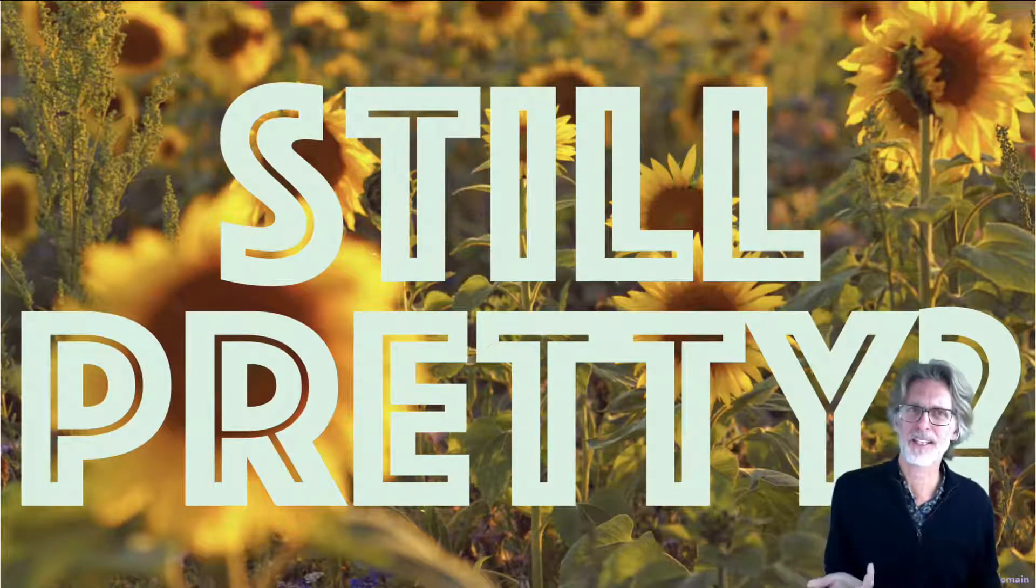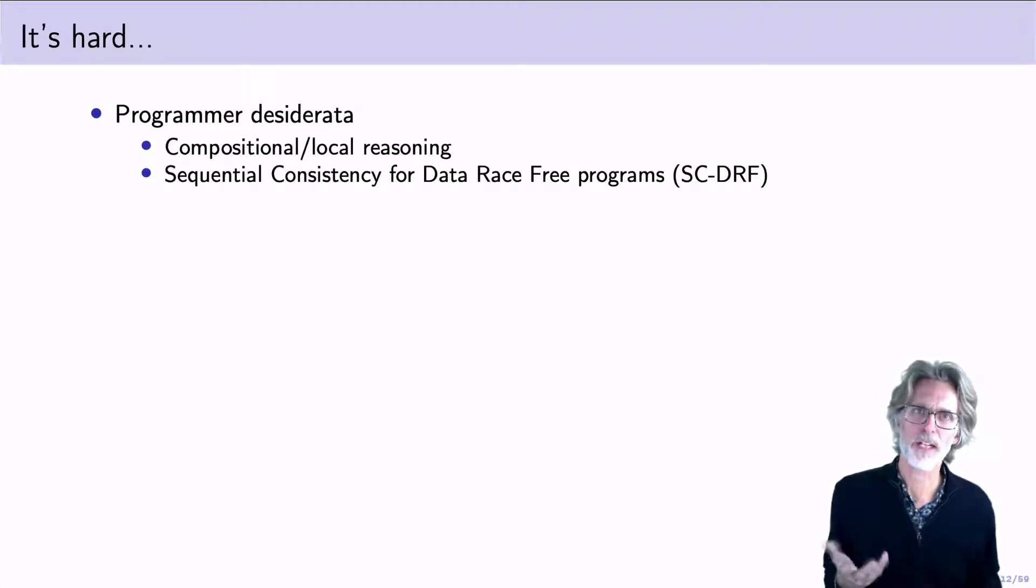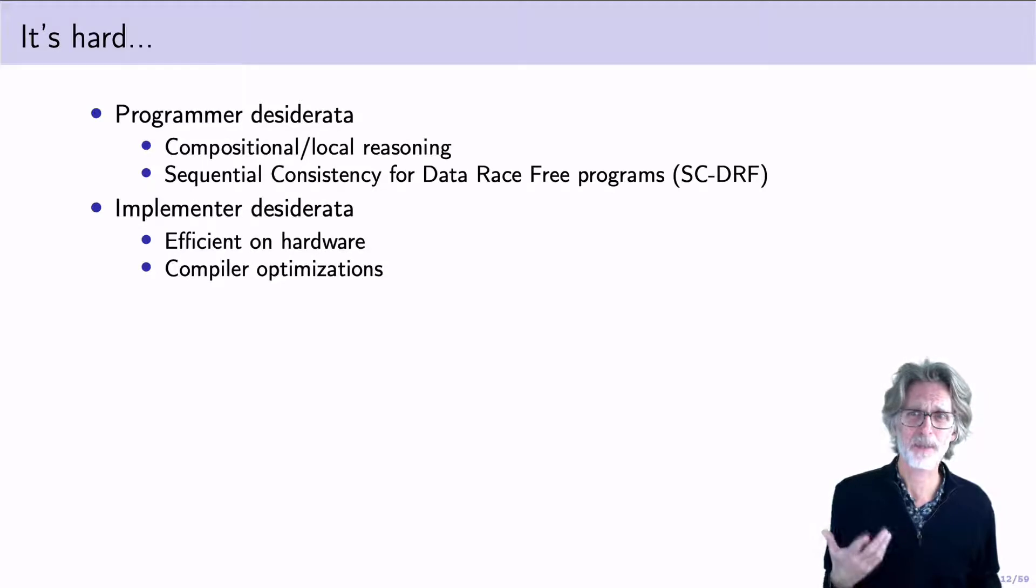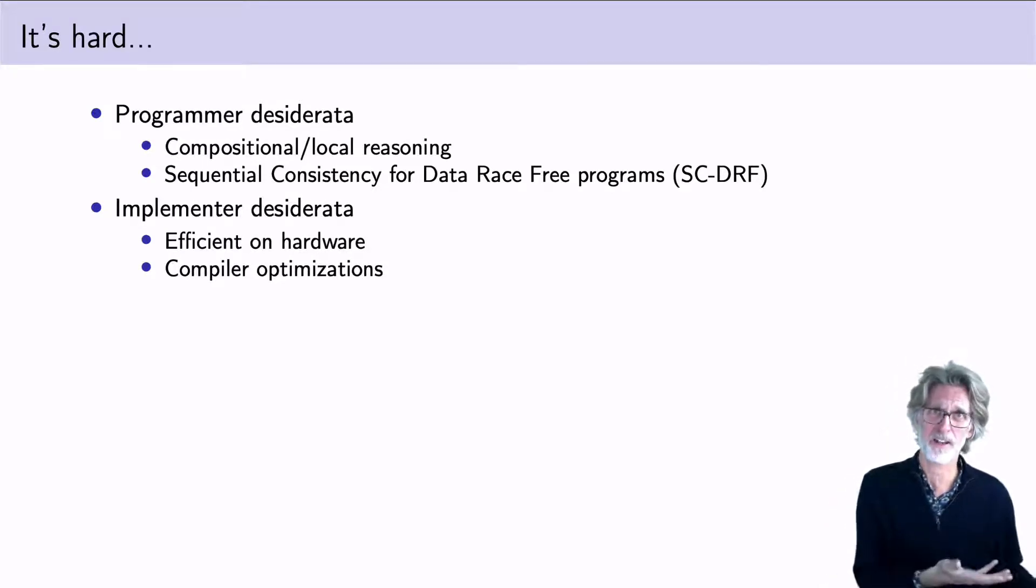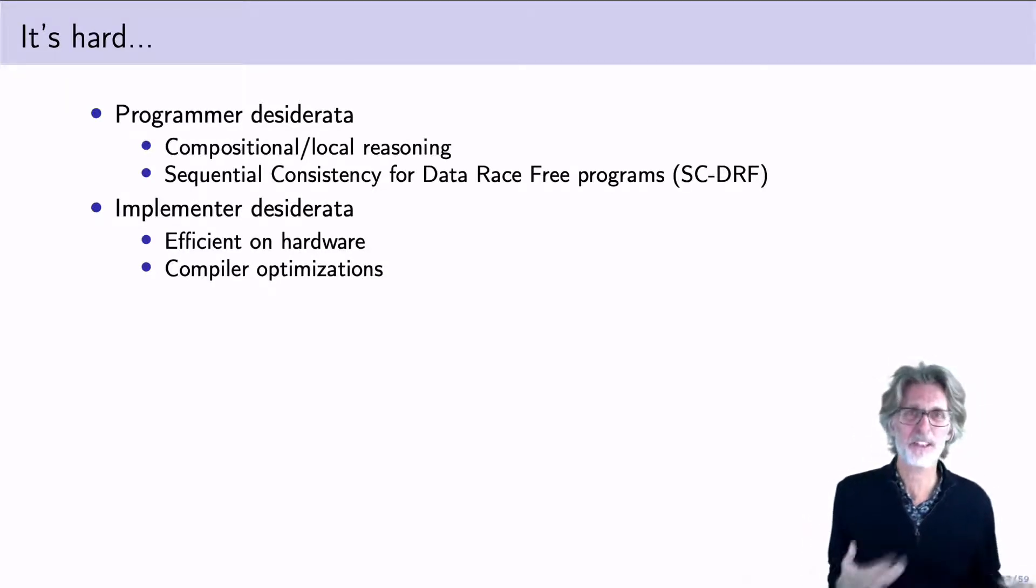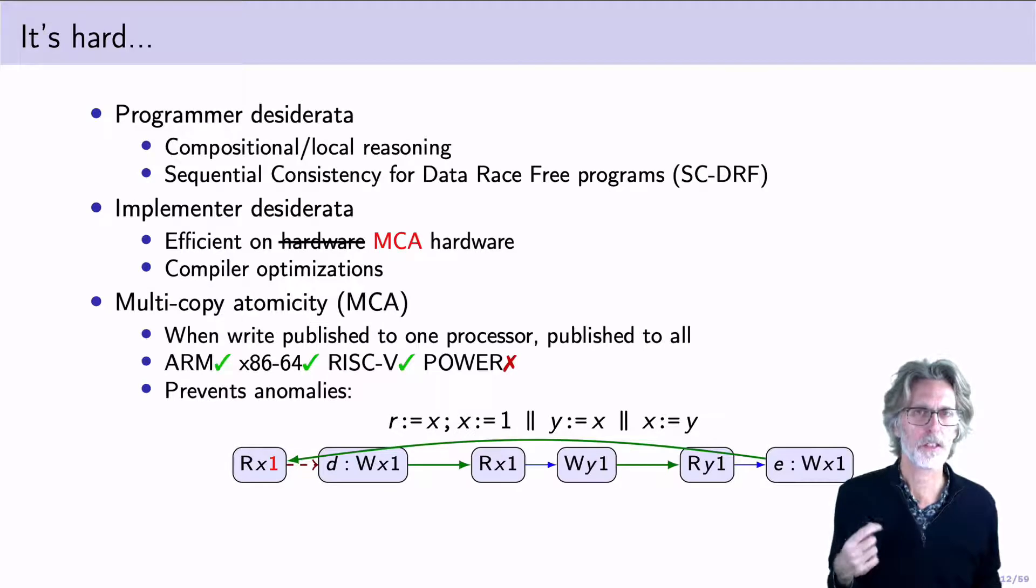But it turns out that this problem is hard. We're trying to satisfy programmers who want compositional and local reasoning, as well as implementers who want efficiency on hardware. And these turn out to be difficult to get right. In this paper, we only make one real sacrifice, which is that we're going to focus on MCA hardware. That means that when a write is published to one processor, it's going to be published to all of them. And this is the case for ARM, for x86, for RISC, but not for the power processors.